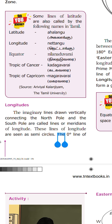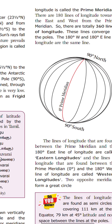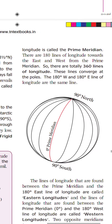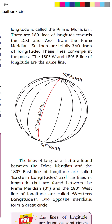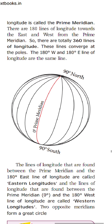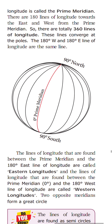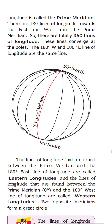The zero degree line of longitude is called the prime meridian. See in the picture — the zero degree line is marked there. That zero degree meridian is called the prime meridian; it is shown in red color.